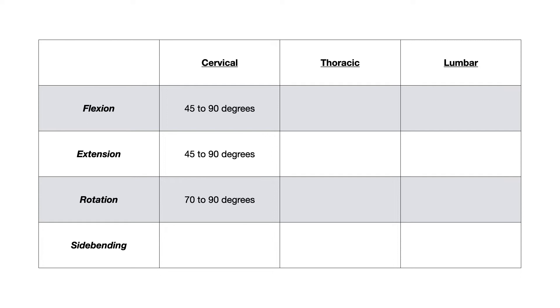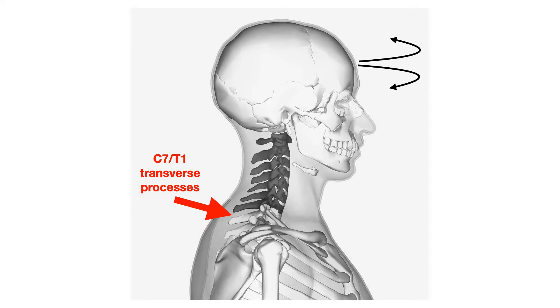For cervical rotation, it's 70 to 90 degrees. So again, you're going to have your fingers in that C7T1 area, but this time you'll be monitoring the transverse processes. And you're going to have the patient rotate their neck or their head to the right or the left. And you're going to approximate what is the degree or what is the range of motion at that C7T1 transverse process. And then you would be applying that to the entire cervical spine.